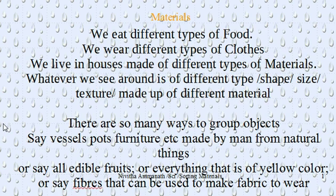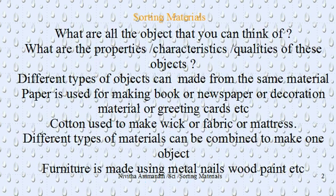Everything that is of yellow colour is one grouping. For example, a yellow fruit like mango or a yellow flower of mustard — grouping all yellow-coloured things together. Or we can group based on fibers — man-made fibers or natural fibers. We can group certain things based on their characteristics, their property, what they are used for, their colour, their shape, and so on.